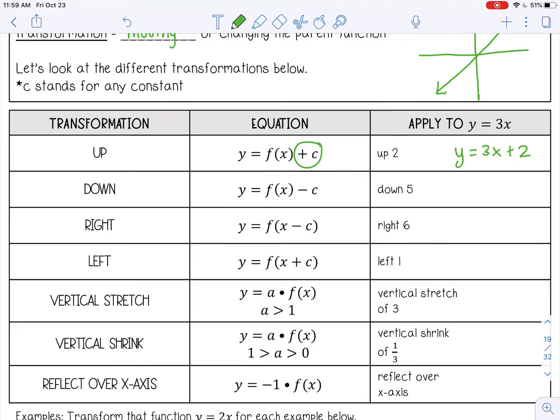And then down five, you're going to subtract five, so minus five. So 3x minus five.